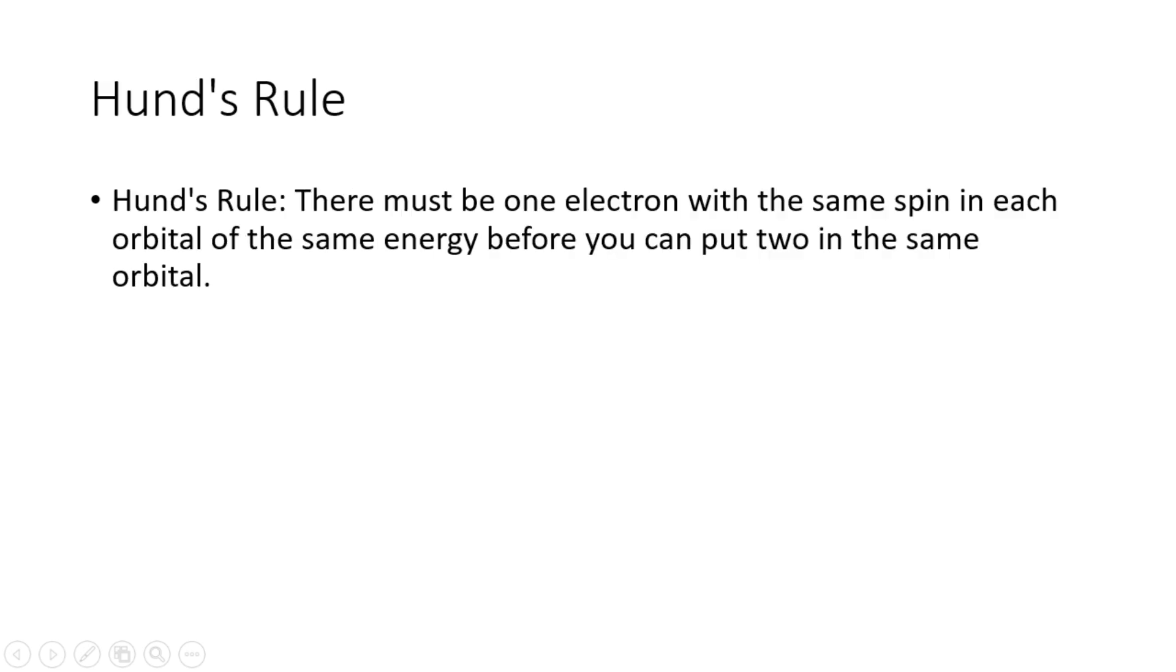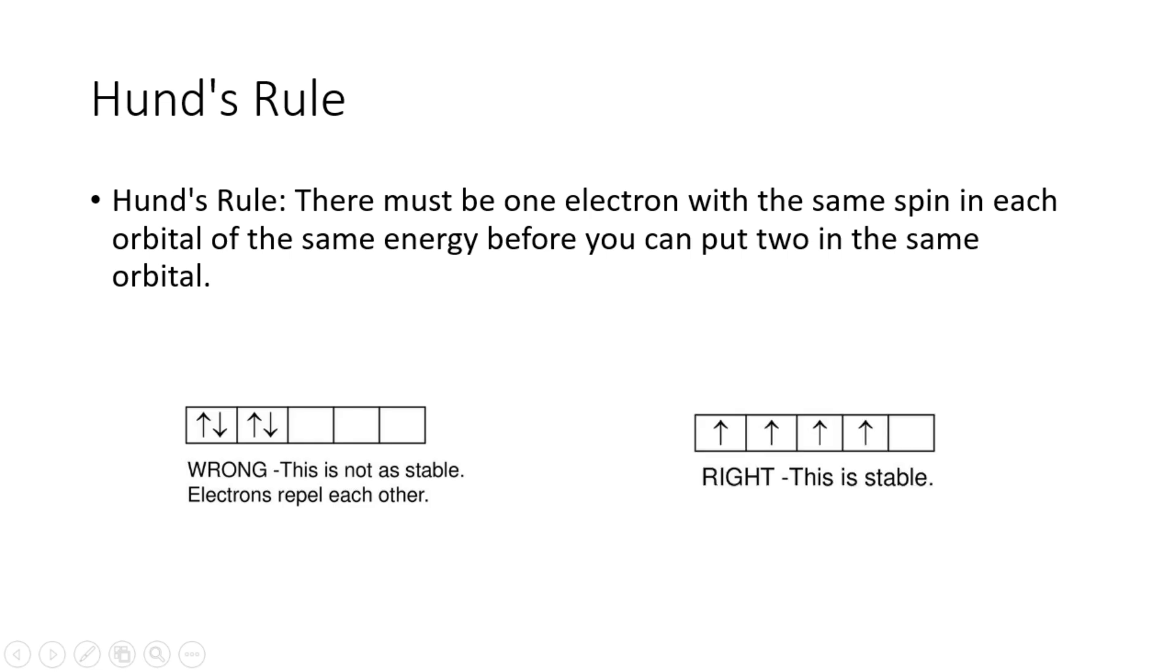Third principle is Hund's rule, which states that there must be one electron with the same spin in each orbital of the same energy before you can put two in the same orbital. According to Hund's rule, if you have four electrons to be filled in a d orbital, this is not stable filling because electrons repel each other. But this one is stable.